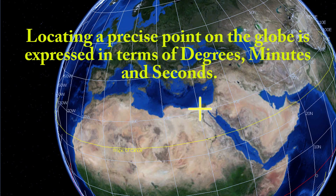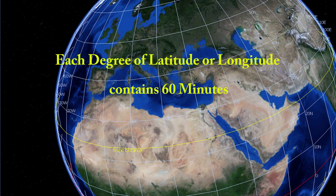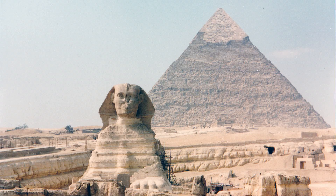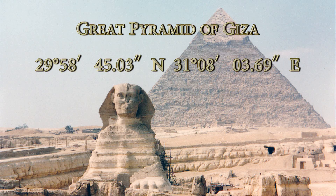To locate a precise point on the earth's surface, each degree of latitude and longitude has been divided into minutes and seconds. There are 60 minutes in each degree, and each minute is divided into 60 seconds. For example, the coordinates for the Great Pyramid of Giza are written as 29 degrees 58 minutes and 45 seconds north, 31 degrees 8 minutes and 3 seconds east.